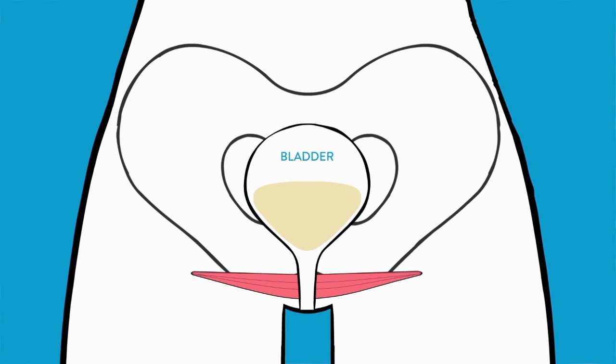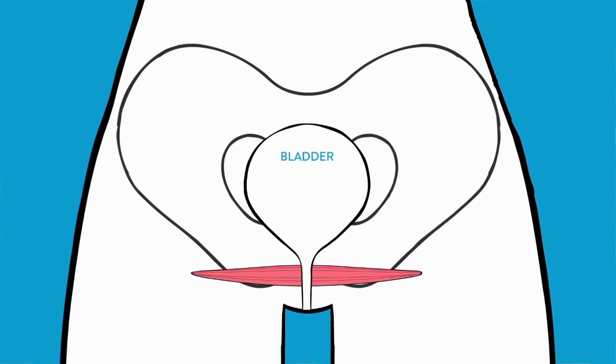The pelvic floor supports the bladder as the muscles are kept firm and slightly tense to stop leaks. When you urinate, the pelvic floor muscles relax and afterwards tighten again to restore control.